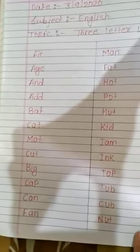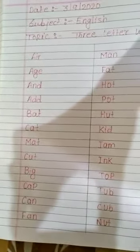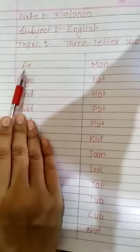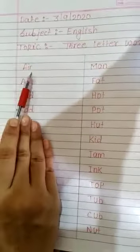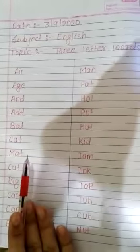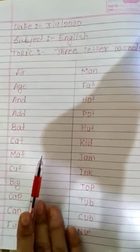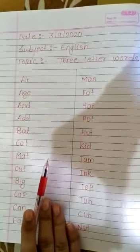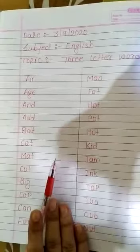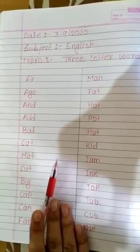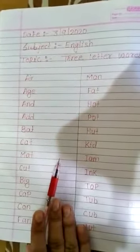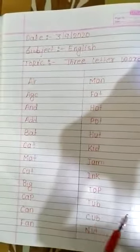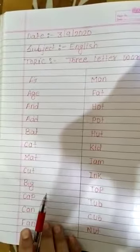तो बच्चों, ये सारे वर्ड जो मैंने आपको बताये हैं, ये कौन से वर्ड हैं? ये 3 लेटर वर्ड हैं. जैसे आप काउंट कर सकते हो, 1, 2, 3. इसमें कितने लेटर हैं? 3 लेटर. और ये 3 अल्फाबेट से मिलके जो बने हैं, उसे हम लोग 3 लेटर वर्ड कहते हैं, ठीक? आपने पहले भी प्रीवियस वीडियो देखी होगी, तो आपने पढ़ा होगा 3 लेटर वर्ड. मैं आपको फिर से एक बार बढ़ा रही हूँ, तो आप लोग इस वीडियो की मदद से अच्छे से पढ़ें, लिखें और याद करें. फिर से एक बार मैं रिपीट करती हूँ सारे वर्ड को, ओके?